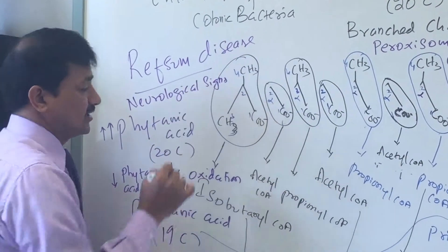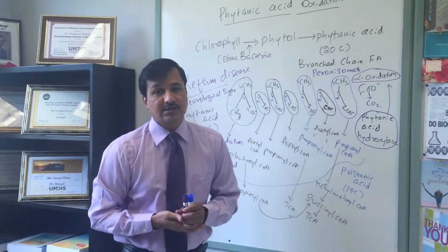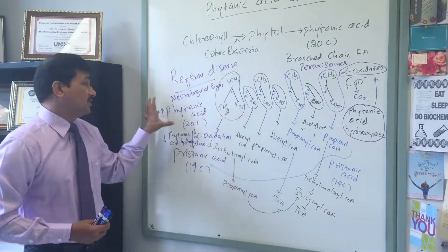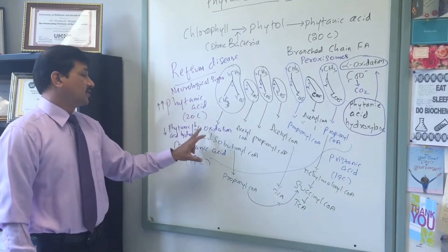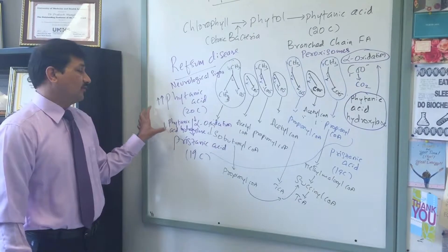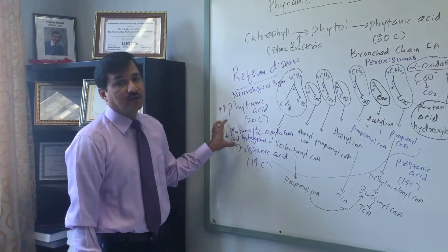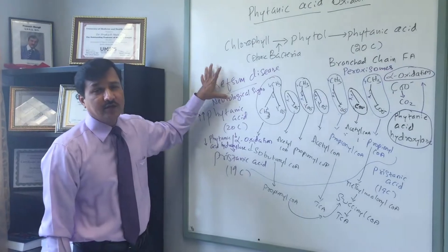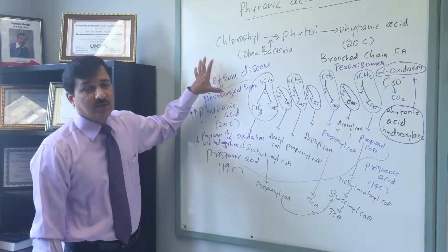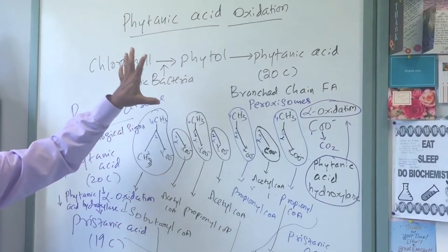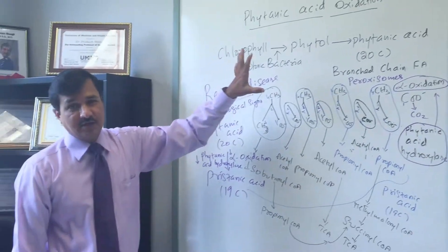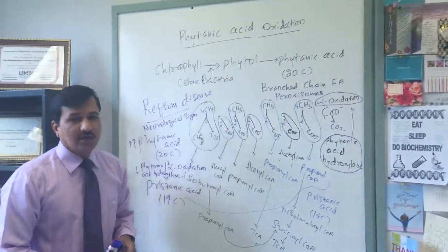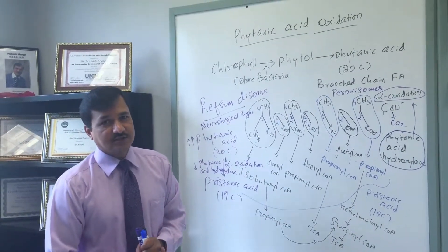Accumulated phytanic acid particularly affects neuronal tissue. Refsum's disease is manifested with neurological signs including peripheral neuropathy, cerebellar ataxia, and retinitis pigmentosa. These features arise because alpha oxidation is defective due to deficiency or mutation in the gene coding for phytanic acid hydroxylase. Patients with Refsum's disease need to avoid dairy products and ruminant meat to reduce phytanic acid intake. This concludes the topic of phytanic acid oxidation — alpha oxidation followed by beta oxidation.